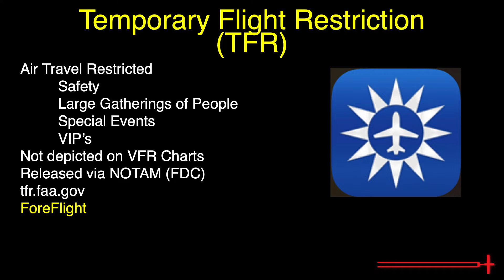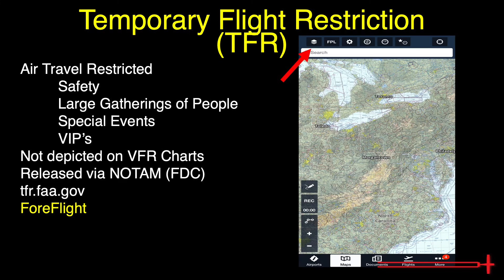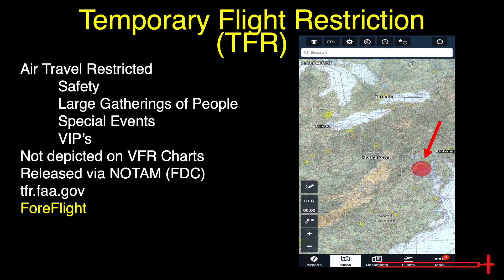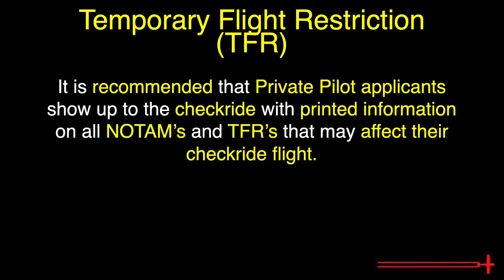The ForFlight application offers visual aid with temporary flight restrictions as well. On the Map Overlay drop-down menu, find the TFR option. Upon activating the TFR overlay, one may view present and some upcoming TFRs on a VFR sectional. It is recommended that private pilot applicants show up to the checkride with printed information on all NOTAMs and TFRs that may affect their checkride flight.